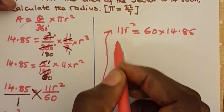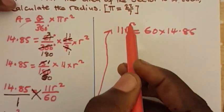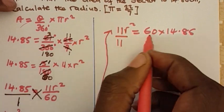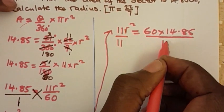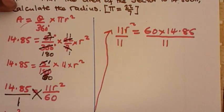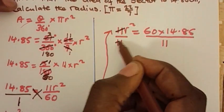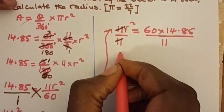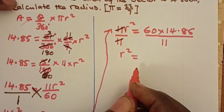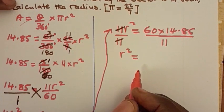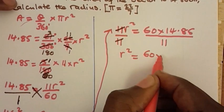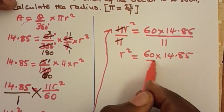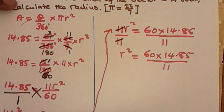We need to isolate r squared on one side, so we divide both sides by 11. The 11s cancel, and we are left with r squared is equal to 60 times 14.85 divided by 11.